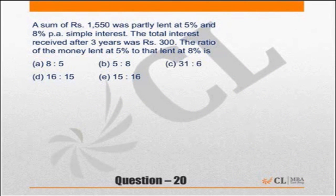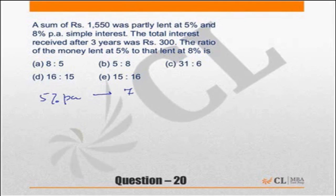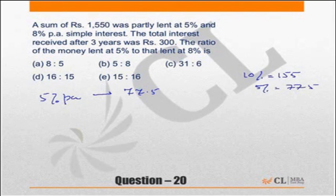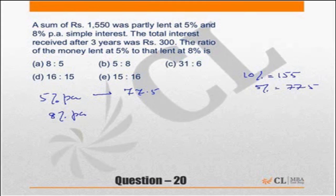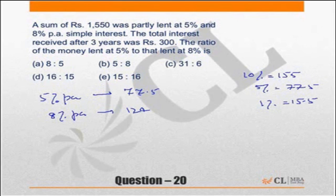To repeat: if the entire amount was lent at 5% per annum, you would have earned ₹77.5 per year. 10% of 1550 is ₹155, so 5% is half of that, ₹77.5. If the entire amount was lent at 8% per annum, you would have earned ₹124. Again: 1% is ₹15.5, 2% is ₹31, 4% is ₹62, and 8% is ₹124.